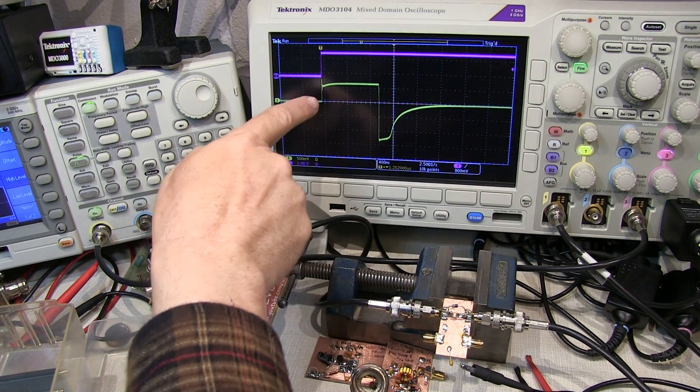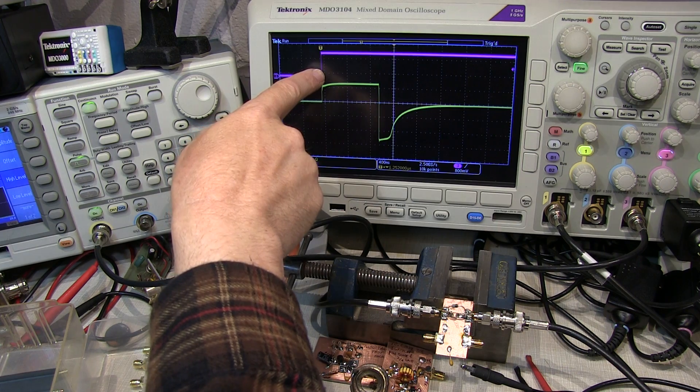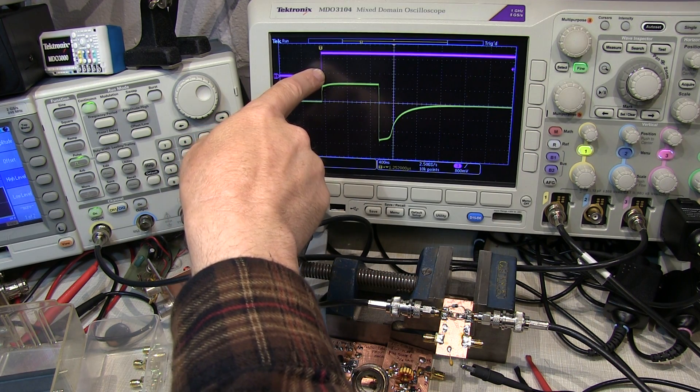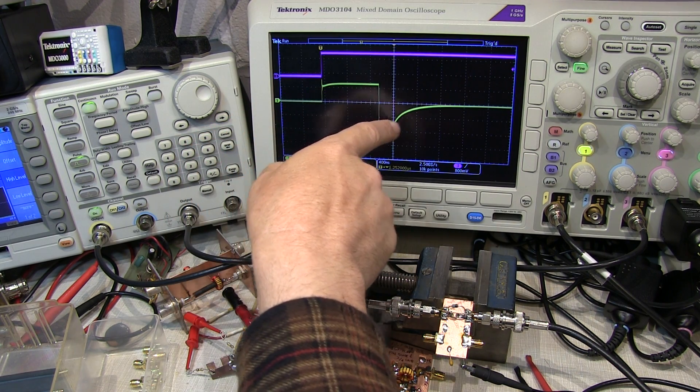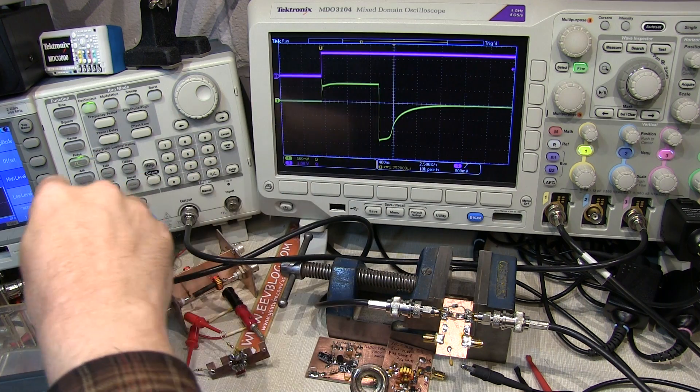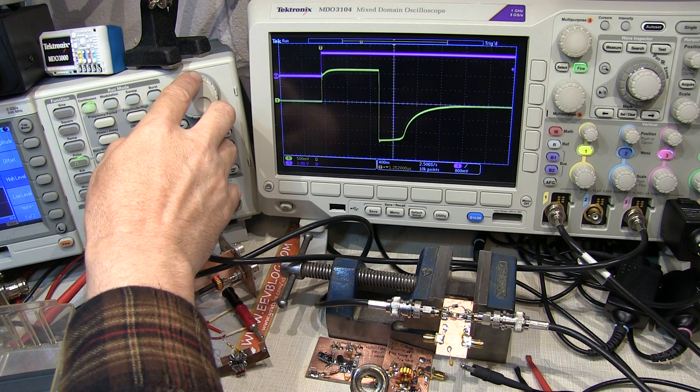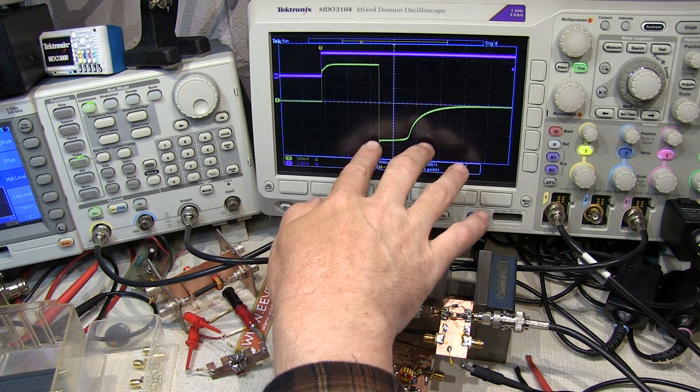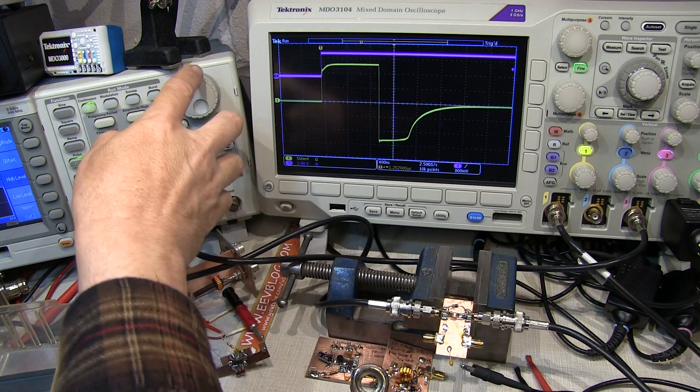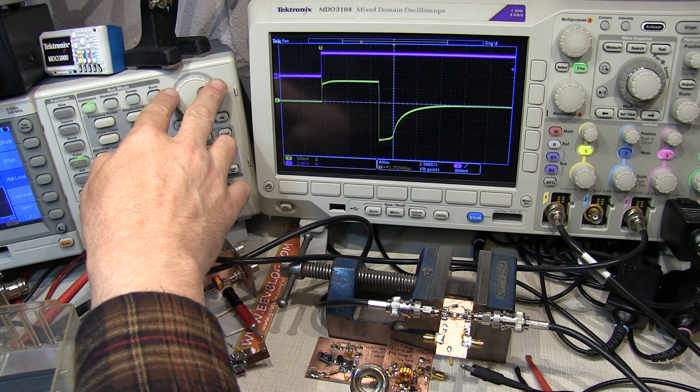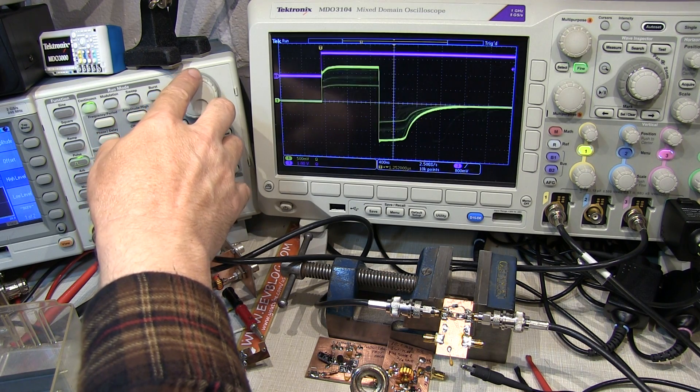So if I increase the forward bias, that will increase the amount of charge that's stored in the junction and make a correspondingly longer reverse recovery time. So let me increase that and we can actually see that effect. The forward bias is increasing. That reverse recovery time is also increasing. So we can kind of see how that effect works.